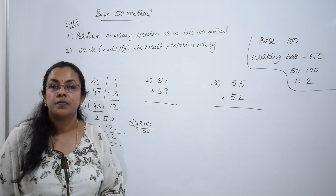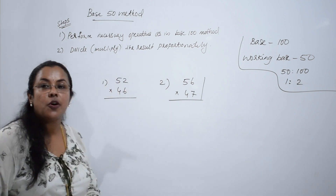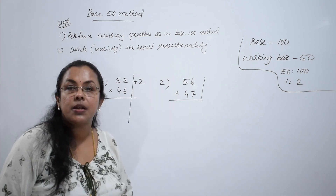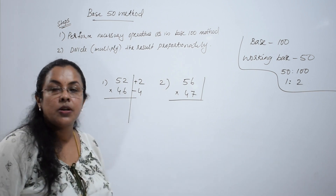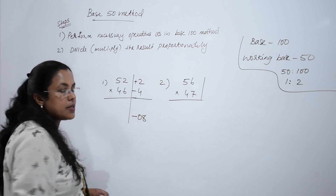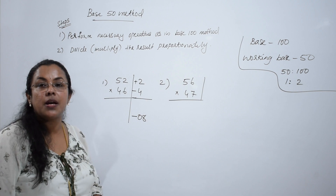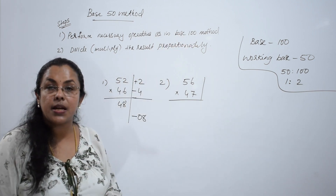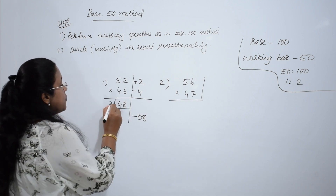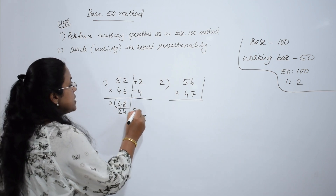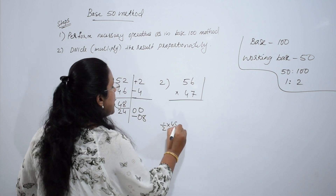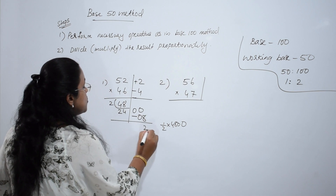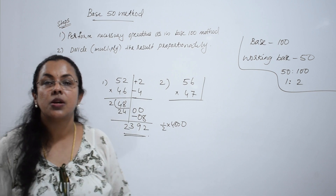We will practice some more questions. First: 52 into 46 — one number above the base, one below. 52 is 2 more than 50, and 46 is 4 less than 50. First step: 4 twos are 8, this is minus 8. Now, 46 plus 2 is 48. Second step: divide proportionately — 48 divided by 2 is 24. This is actually 2400. Half of 4800 is 2400. Subtract 8 from 2400. Final answer: 2392.